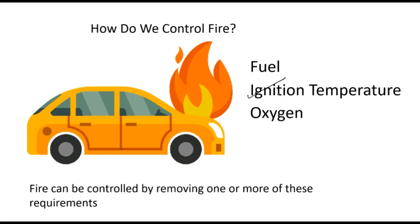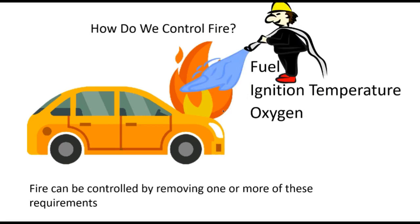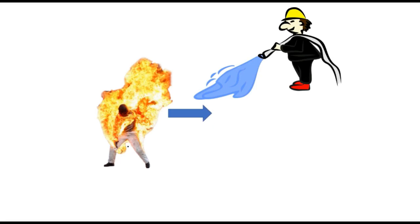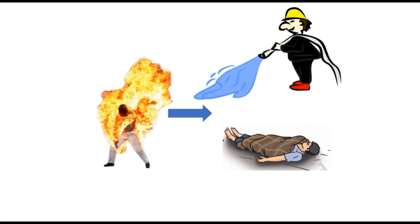To control ignition temperature, we must keep the temperature low so it does not reach the ignition point. That is why a fireman pours water — to keep it cold and not allow the fuel to reach its ignition temperature. Alternatively, you can stop oxygen — for example, if someone's nylon clothes catch fire, wrap them with cloth to cut off the oxygen supply.